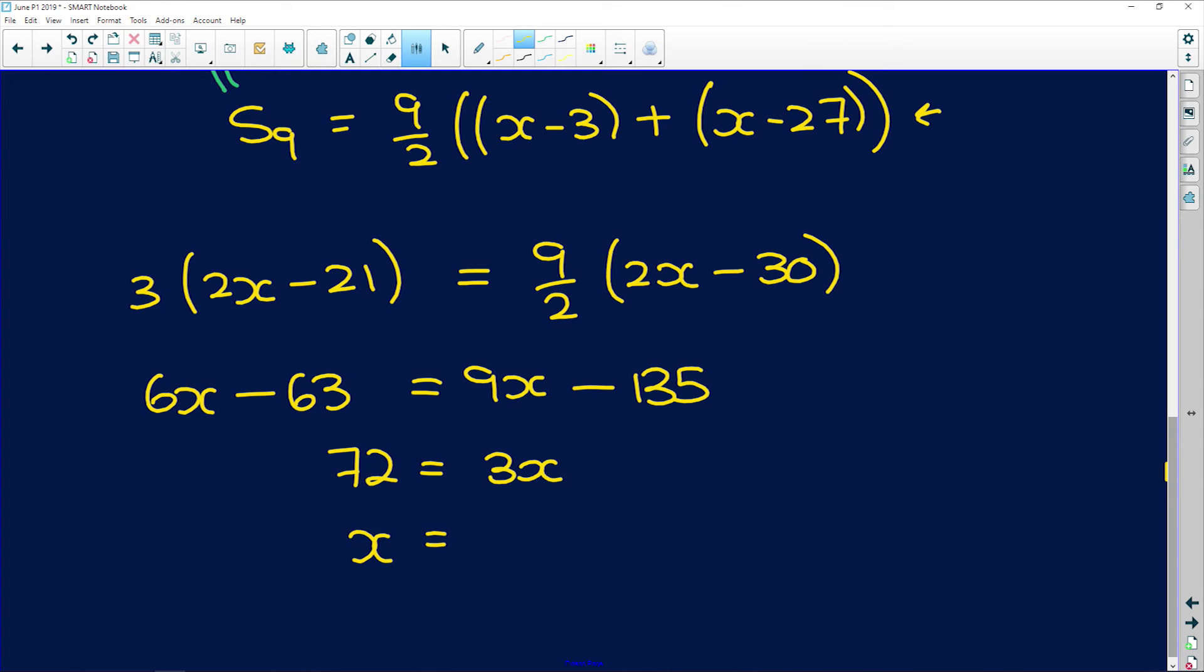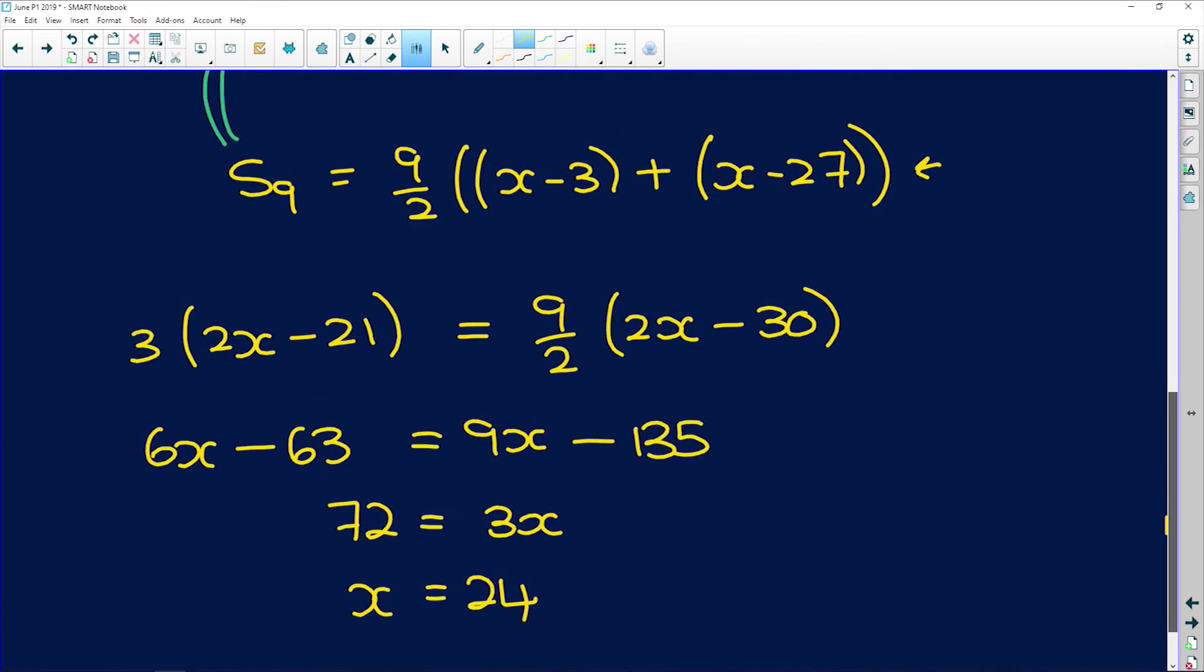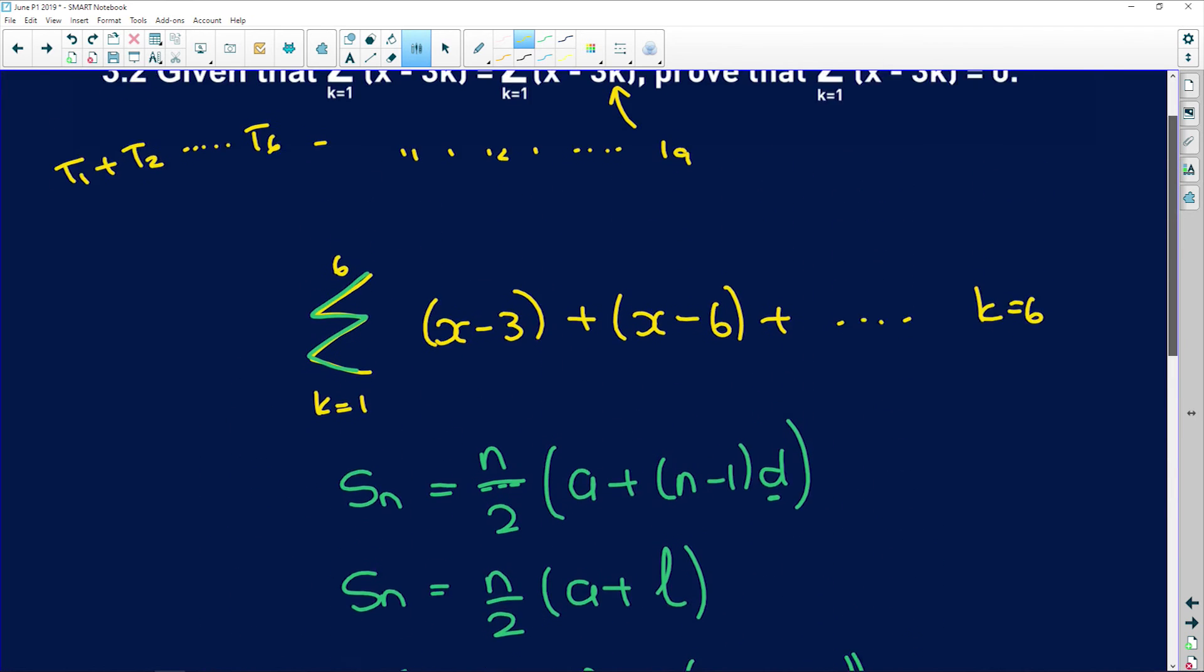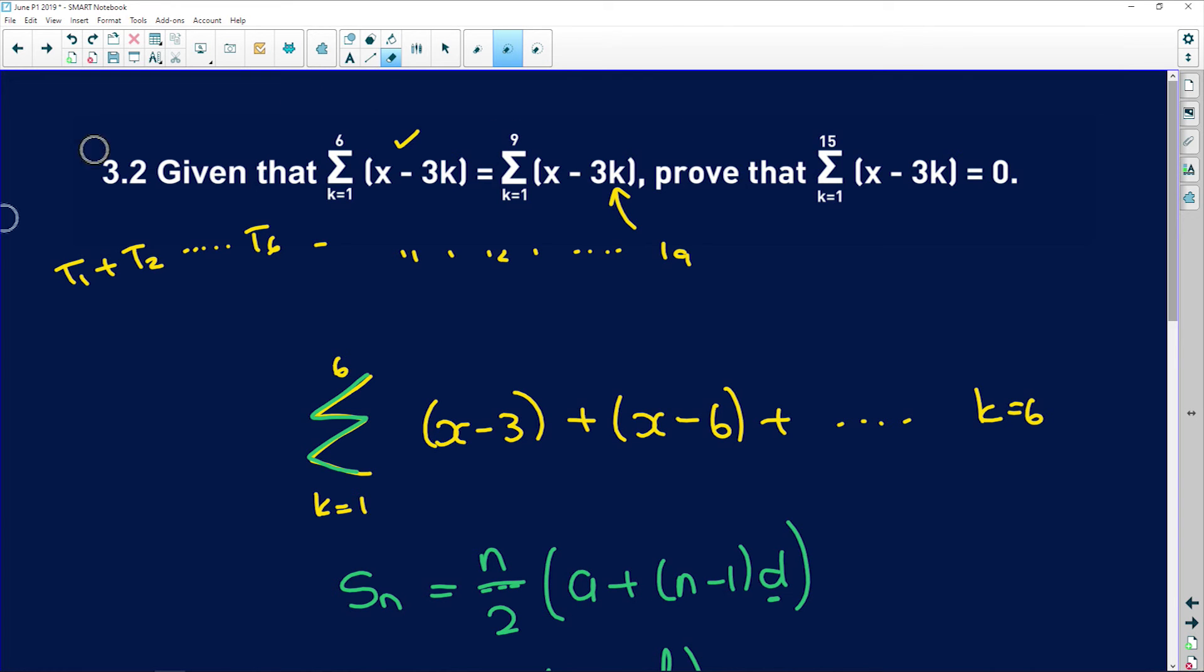So that means that x is equal to 72 divided by 3, which is 24. So basically what we've done up until now is we've used this fact to find x. So now that we know that x is 24,